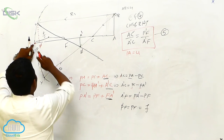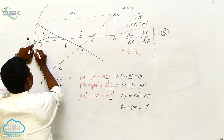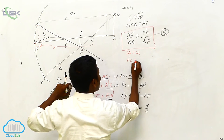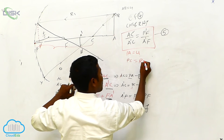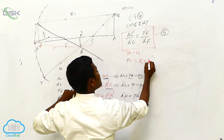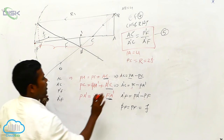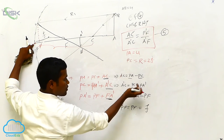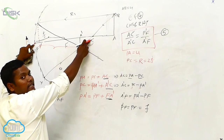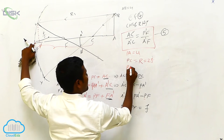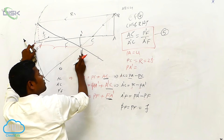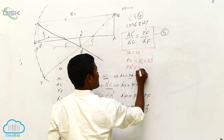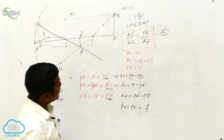Next, PC — already I said, this is the center of curvature. PC is equal to capital R, and R is equal to 2f. Next, PA dash — at A dash, who is there? Image is there. Image which letter? V letter. So PA dash is equal to v.